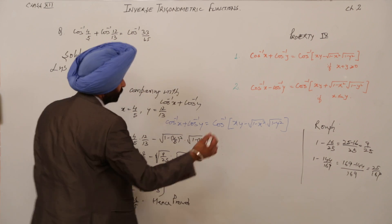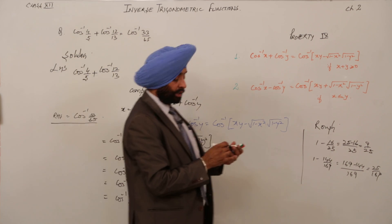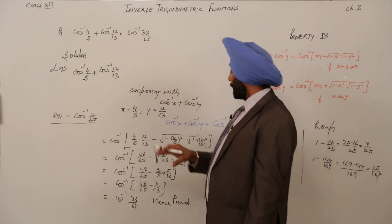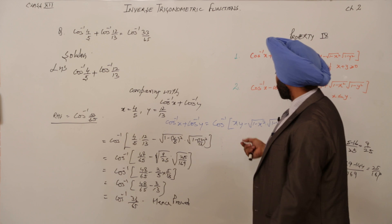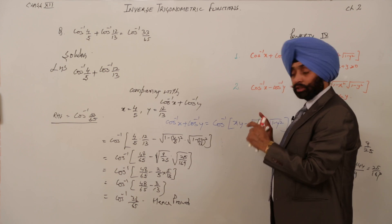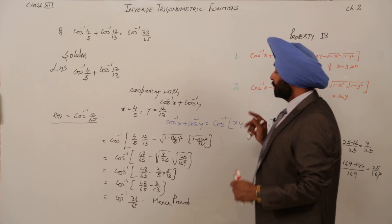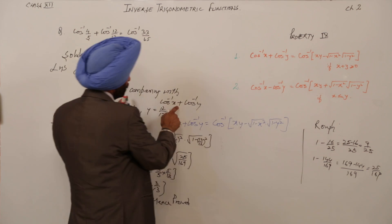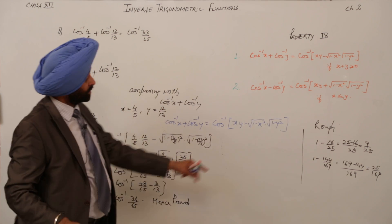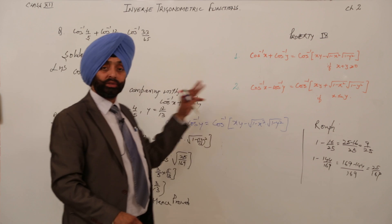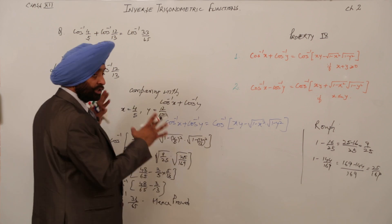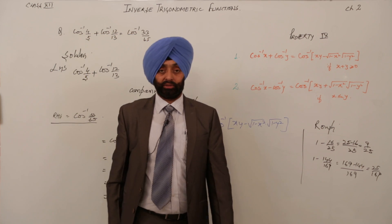Hence proved — left-hand side equals right-hand side. To summarize what I did: first I highlighted the property, second I compared the given expression to identify X and Y, and third I showed the rough work on the same sheet. This is how you can neatly attempt this question.